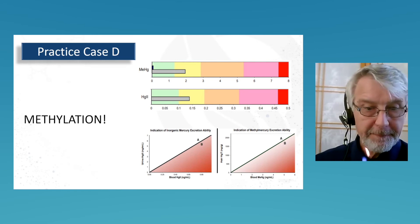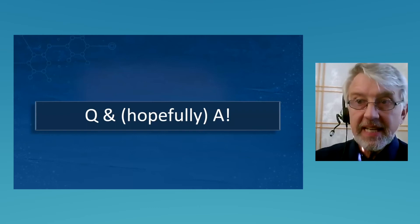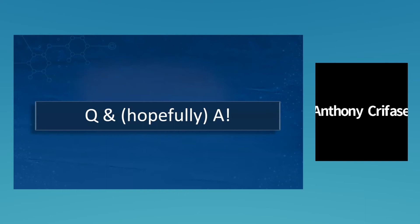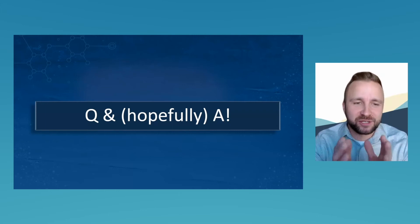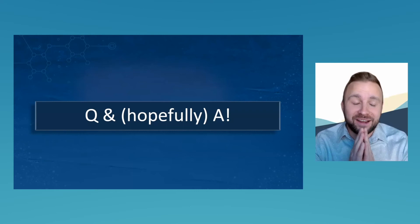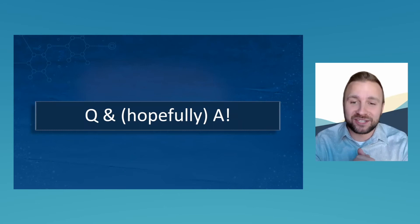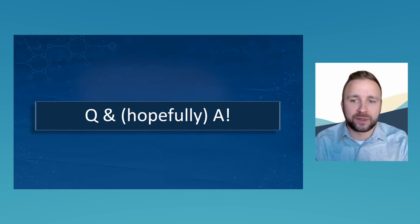Now it's time for questions and answers. Anthony thanks Dale for the presentation, noting how informative it was covering the Mercury Tri-Test and the differences in blood, hair, and urine analysis. The first question: why not start with ordering the blood metals panel, and if mercury is high, then order the mercury tri-test after that?